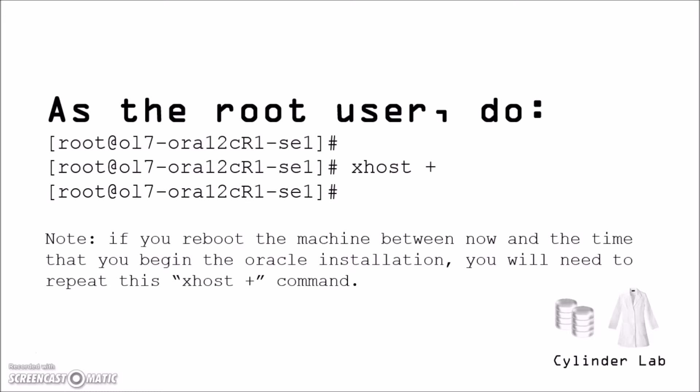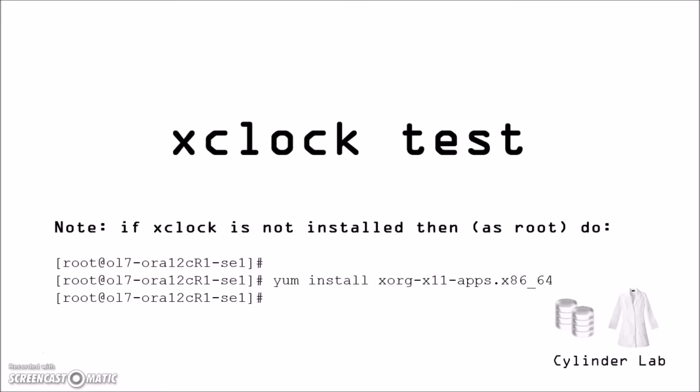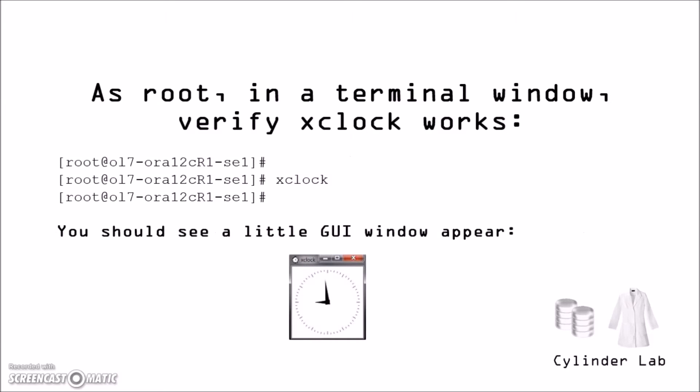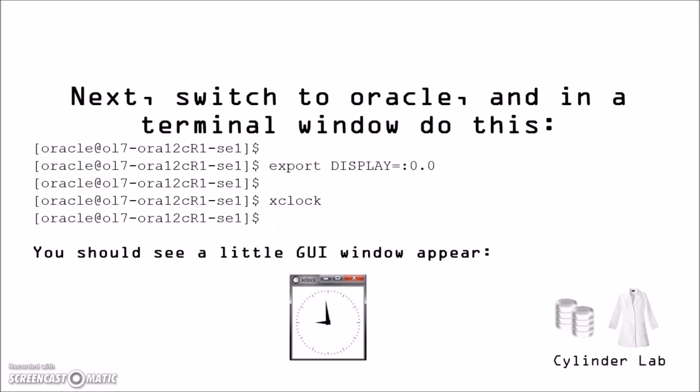As root, do the following command. Note that if you reboot the machine between now and when you actually begin the Oracle installation, you'll need to repeat this xhost plus command. After you've done xhost plus, do a sanity check and try to run the xclock utility. If it's not installed, you can do a yum install as shown. When you run xclock, you should see a little GUI window. Next, switch over to the Oracle user and in a terminal window, do the export display command: export DISPLAY=:0.0. After you've done that, run xclock and you should see a little GUI window as the Oracle user.